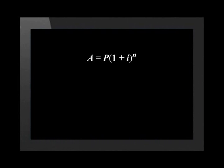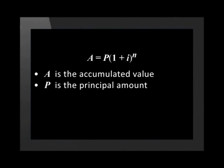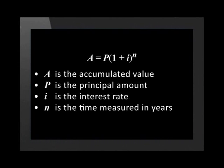Let's start with interest compounded annually. First, let's revise the compound interest formula: A is equal to P times (1 + i) to the power of n. A is the accumulated value at the end of the investment period, P is the principal amount invested at the beginning, i is the interest rate, and n is the time measured in years.